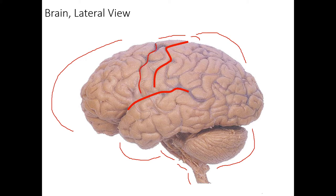So if we have a precentral gyrus, we also have a precentral sulcus anterior to that. We also have a postcentral sulcus. Now we can see those different gyri outlined there. Let's move down into the temporal cortex. The temporal cortex has two different primary sulci within it: a superior temporal sulcus and an inferior temporal sulcus. This divides up the temporal cortex into three different gyri. The uppermost one is the superior temporal gyrus, the one in the middle is the middle temporal gyrus, and below that is the inferior temporal gyrus.